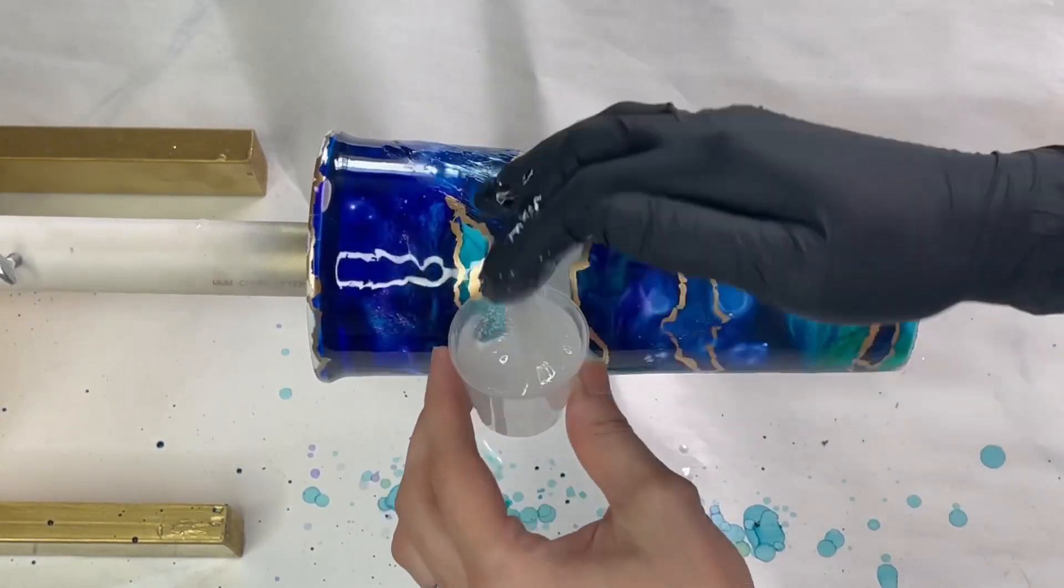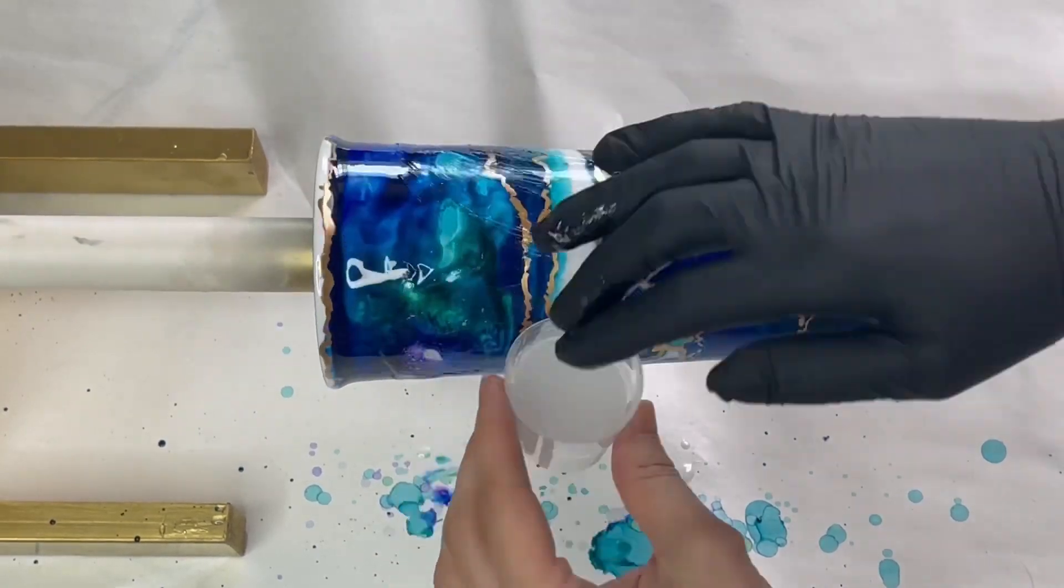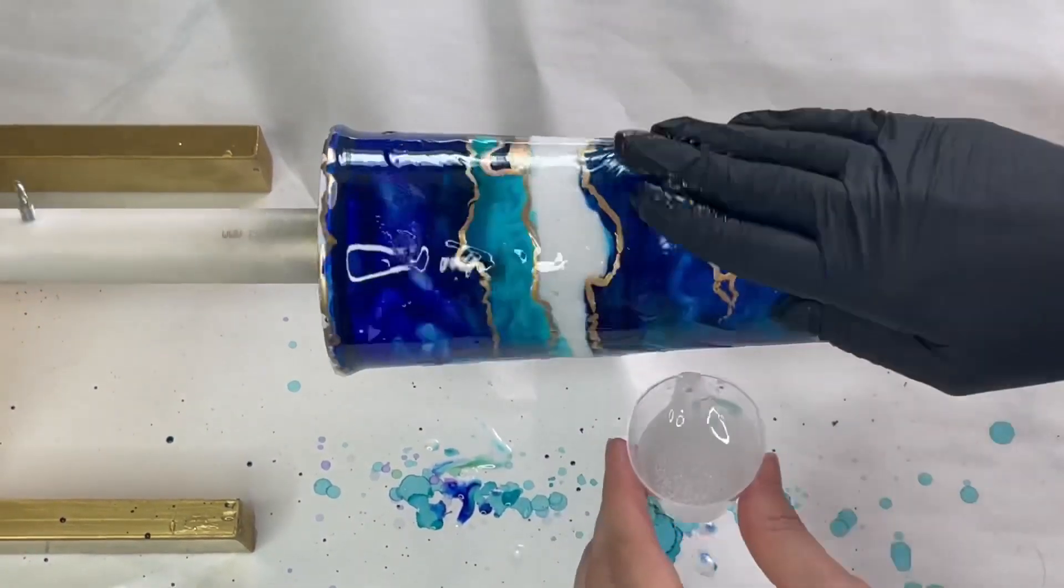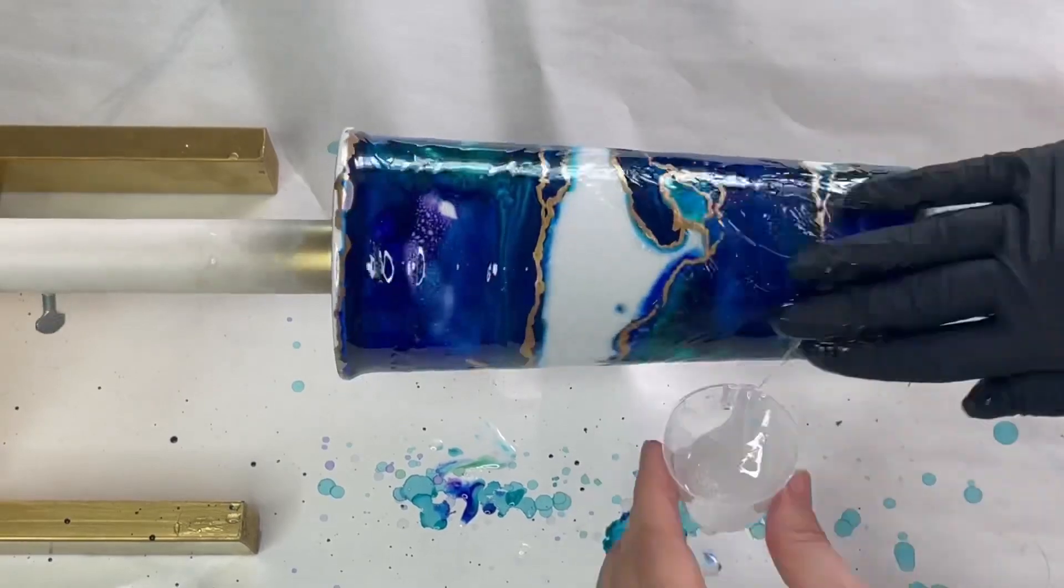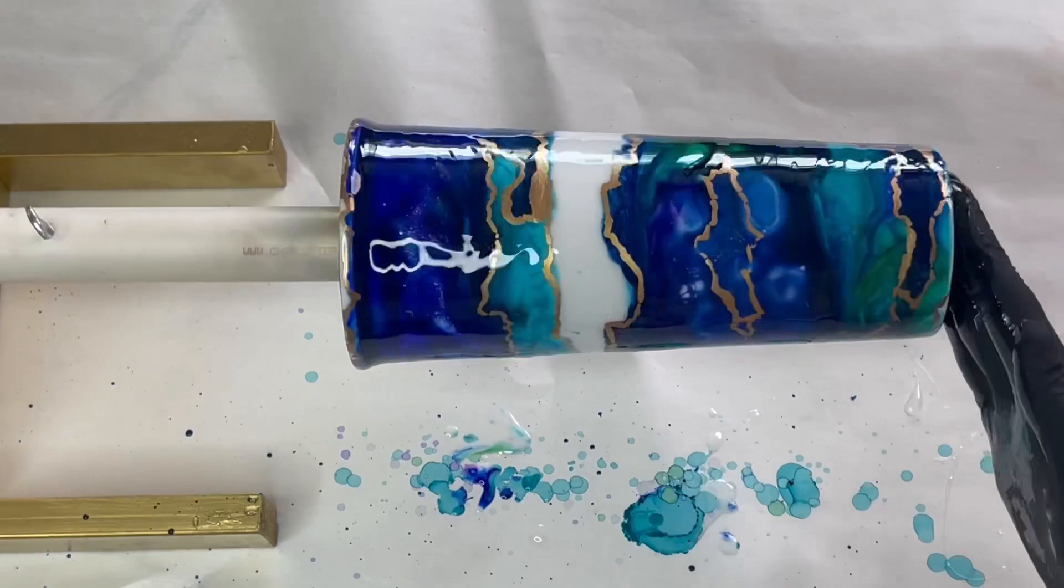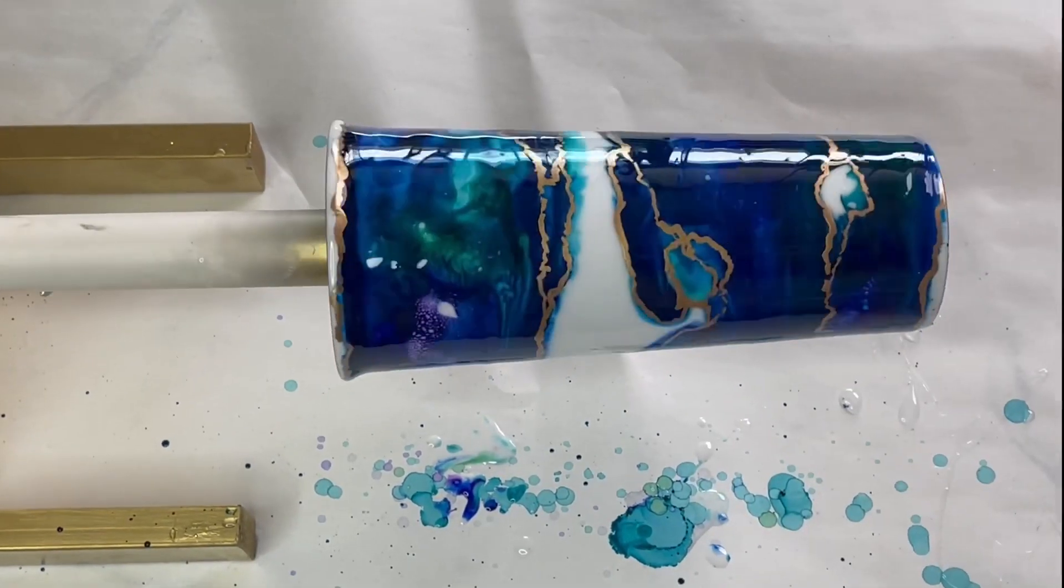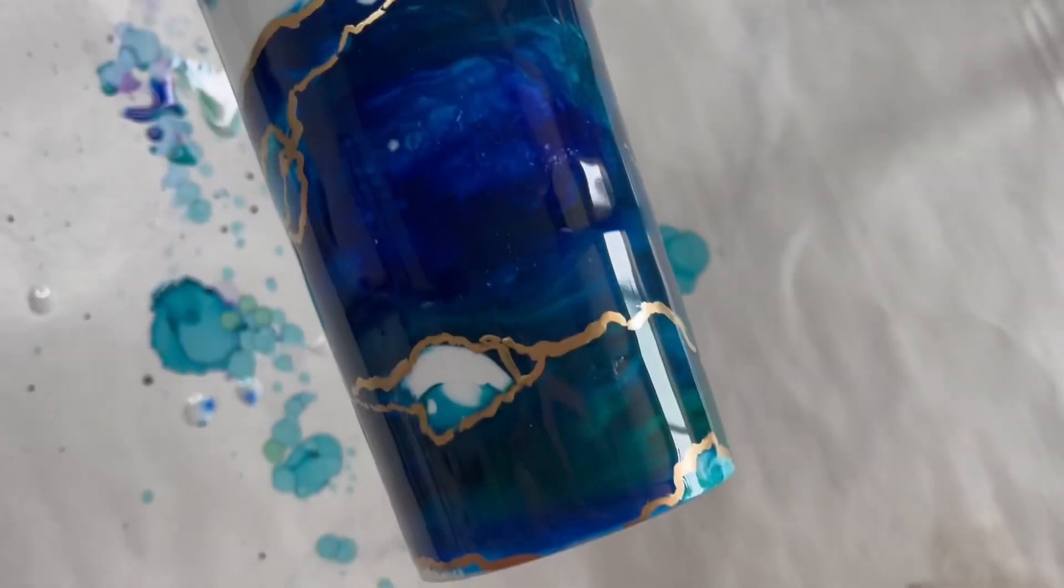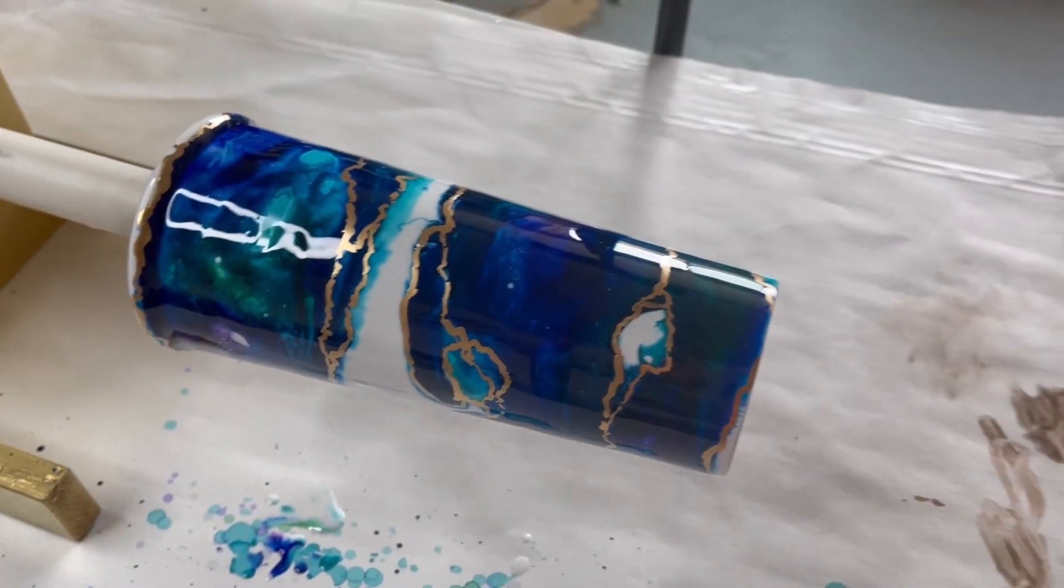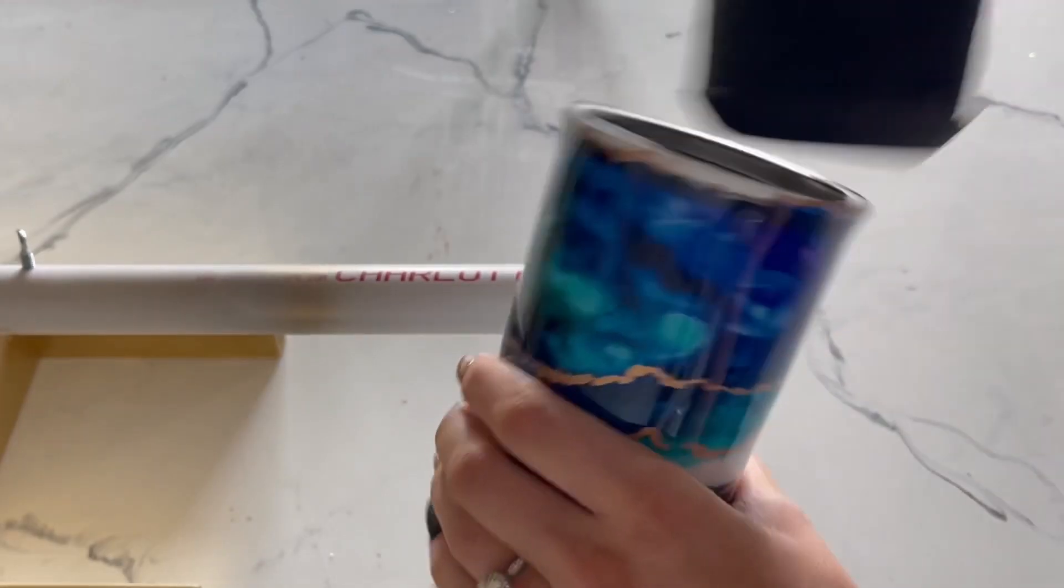Then doing, I think I did two more layers of the epoxy to finish off the cup. And then my cup was done, so just taking it off the turner, adding the lid back on.